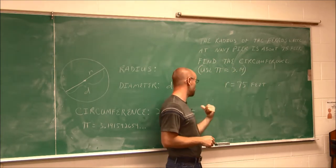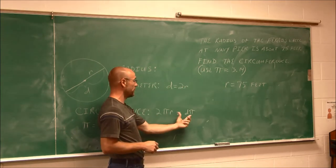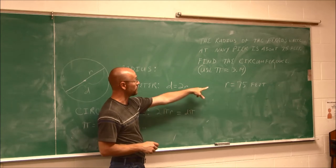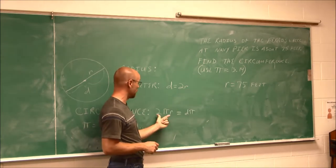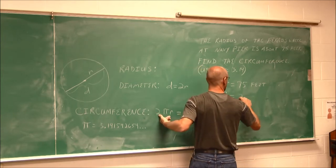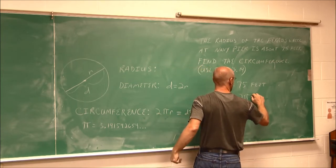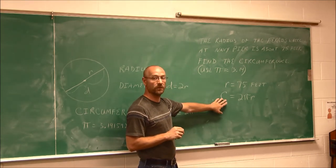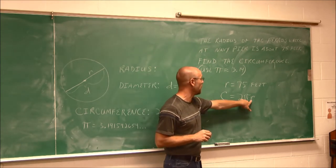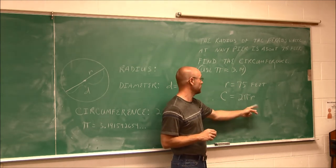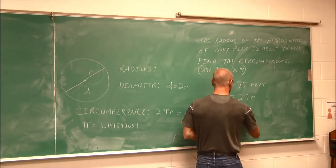And then we're asked to find the circumference. Well, that's where I need the formula. Which version of it am I going to use - the one that has radius or the one that has diameter? Well, the information I was given is the radius, so I'm going to use this one. Circumference is 2πR. So now, all we have to do is do a little substitution. If R is 75 feet, let's evaluate this to find that circumference.